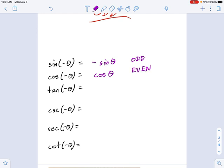Because I have enough information now to fill out the rest of my identities. What is tangent? It's just sine over cosine. So tangent of negative theta is going to be sine of negative theta over cosine of negative theta. Which, using those first two identities, is negative sine of theta divided by cosine of theta, which is negative tangent of theta. So you see tangent is odd, like sine.